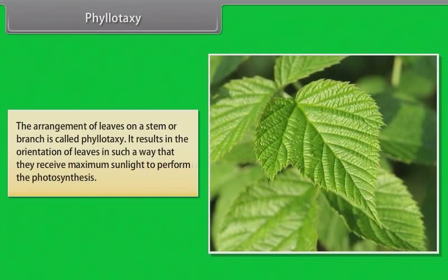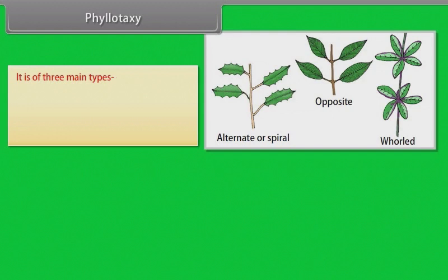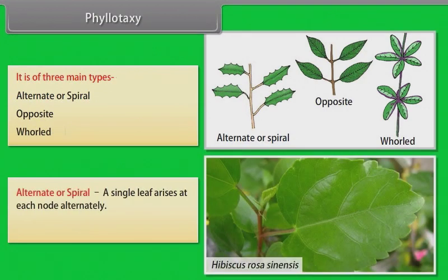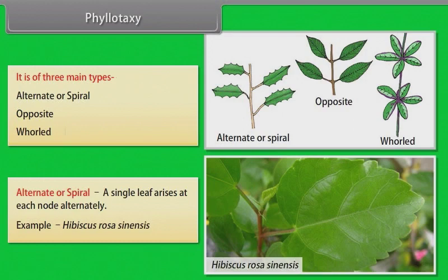Phyllotaxy. The arrangement of leaves on a stem or branch is called phyllotaxy. It results in the orientation of leaves in such a way that they receive maximum sunlight to perform photosynthesis. It is of three main types: alternate or spiral, opposite, and whorl. Alternate or spiral: a single leaf arises at each node alternately. Example: Hibiscus rosa-sinensis.